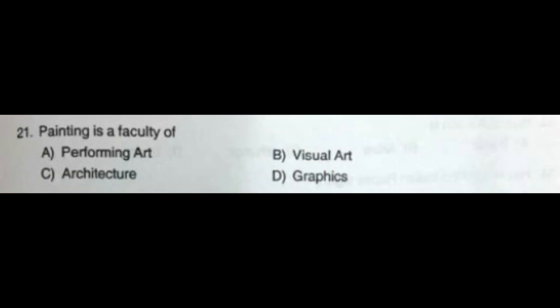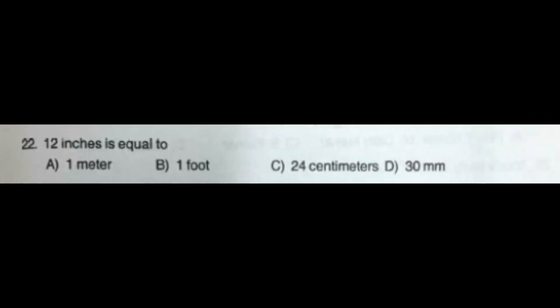Question number 21: Painting is a faculty of — option A: Performing Art, option B: Visual Art, option C: Architecture, option D: Graphics. The correct answer is option B: Visual Art. Question number 22: 12 inches is equal to — option A: One Meter, option B: One Foot, option C: 24 Centimeters, option D: 30 mm. The correct answer is option B: One Foot.